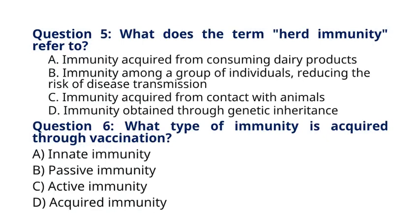Question 5. What does the term herd immunity refer to? A. Immunity acquired from consuming dairy products. B. Immunity among a group of individuals, reducing the risk of disease transmission. C. Immunity acquired from contact with animals. D. Immunity obtained through genetic inheritance. The correct answer to question 5 is option B. Herd immunity occurs when a significant portion of the population becomes immune to a disease, either through vaccination or previous infection, reducing the spread of the disease and protecting those who are not immune.